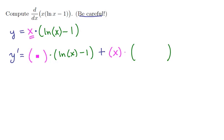The derivative of x is just 1. The derivative of ln x minus 1 is 1 over x minus 0. So there's our raw unsimplified derivative.